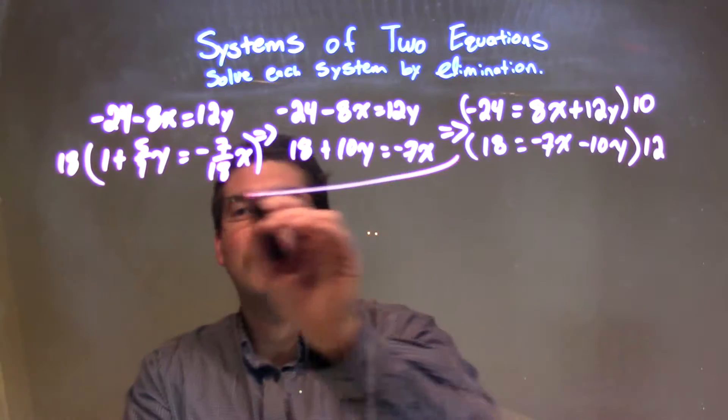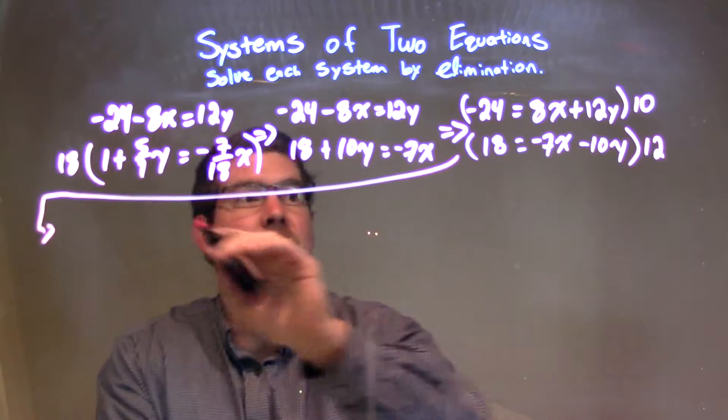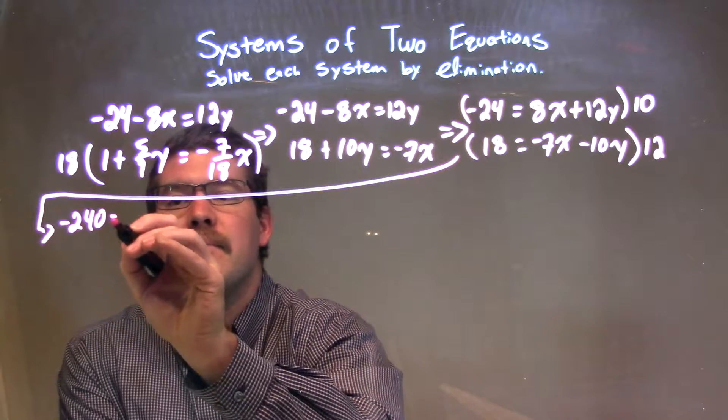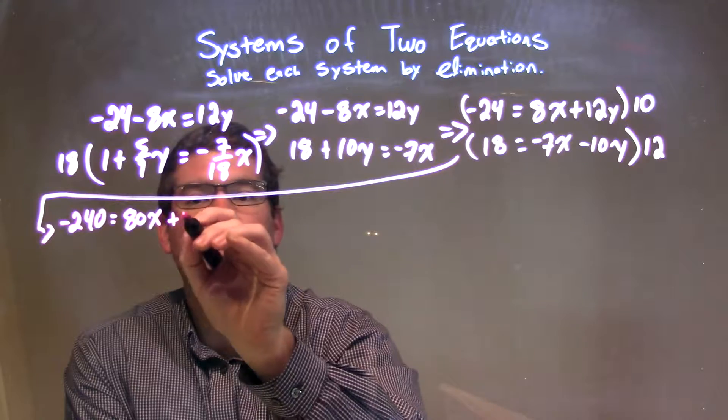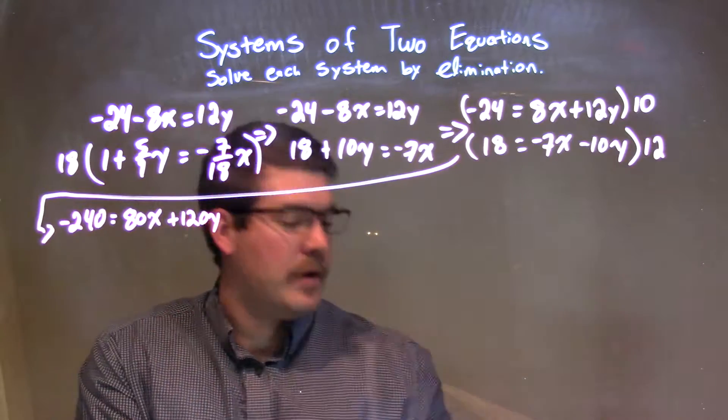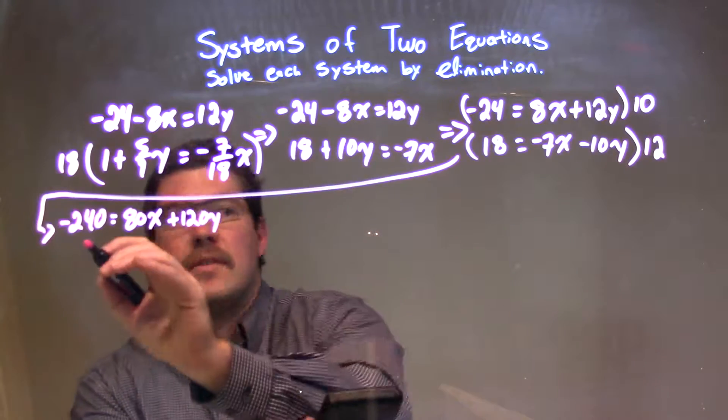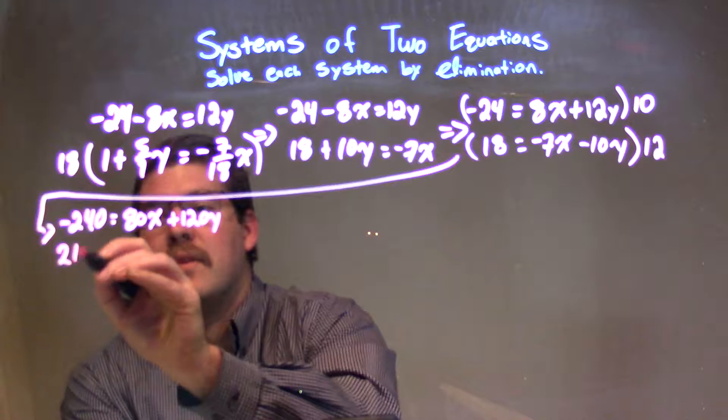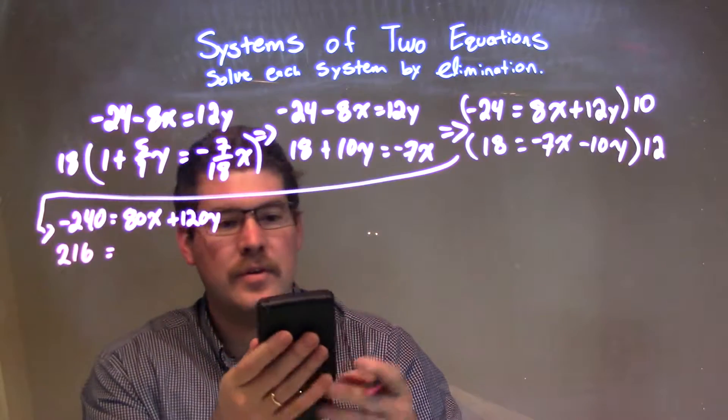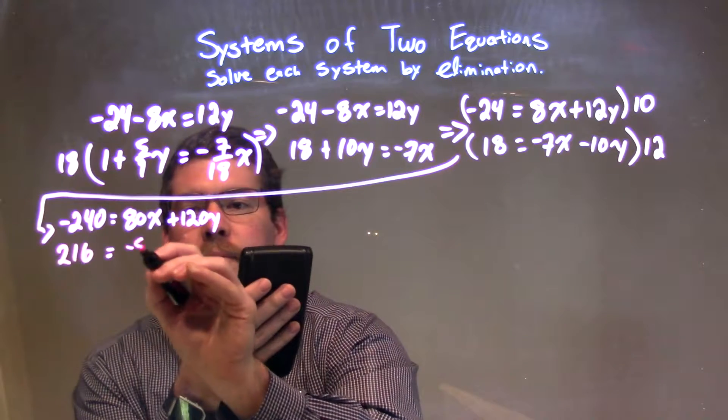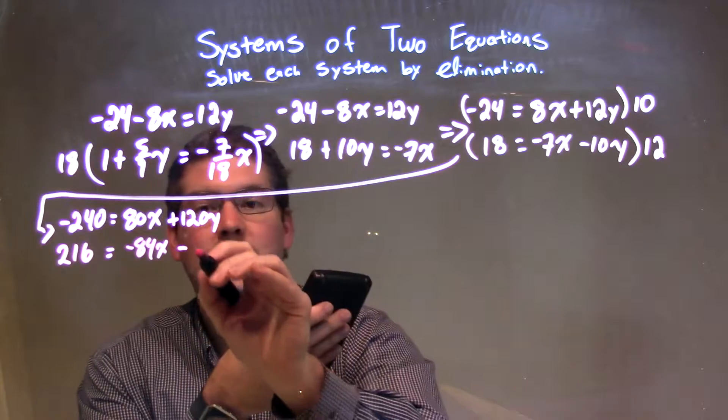So, let's kind of rewrite that right here. And let's go and multiply that out. Negative 240 equals 80x plus 120y. And the second equation, 18 times 12 is 216, so we go positive 216 right here, equals negative 7 times 12, which is a negative 84x, minus 120y.